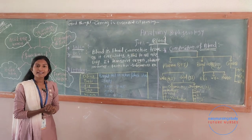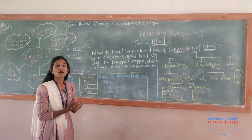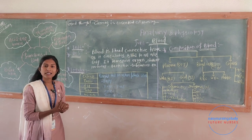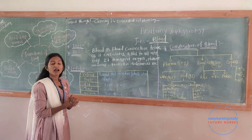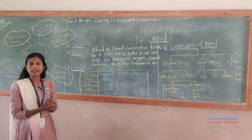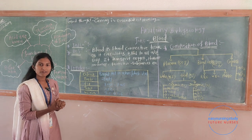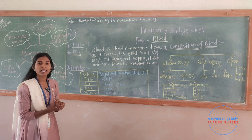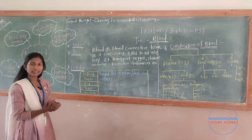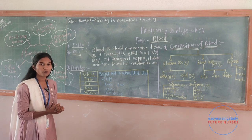So friends, there are a total of six properties of blood: color — bright red in arteries and dark red in veins; taste — salty; pH — 7.35 to 7.45, alkaline in nature; temperature — 38 degrees Celsius; and viscosity — 3.5 to 5.4.